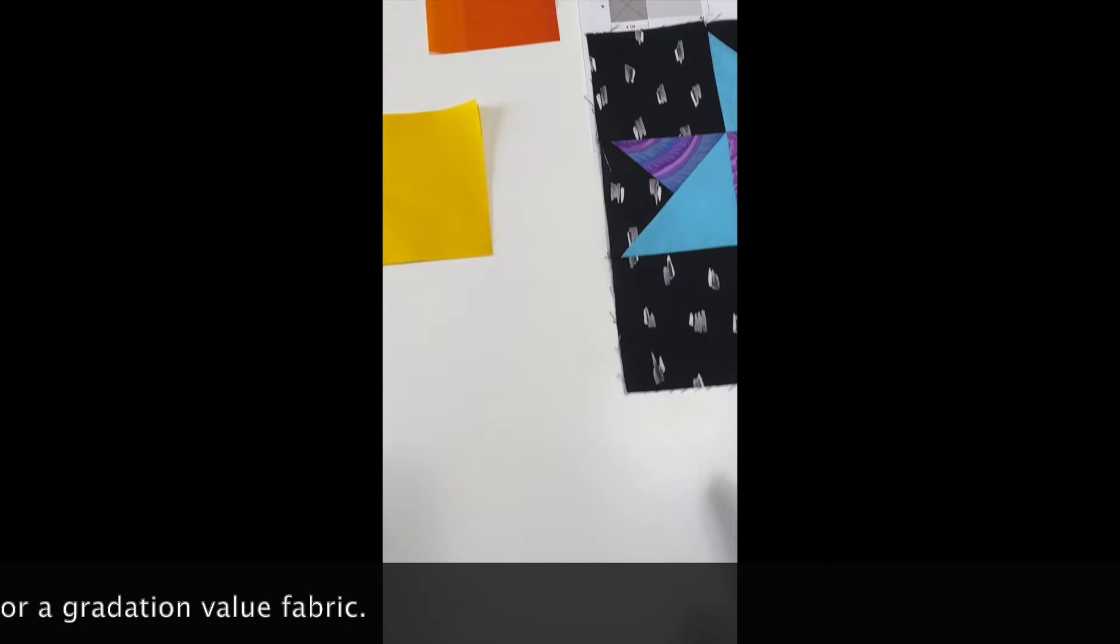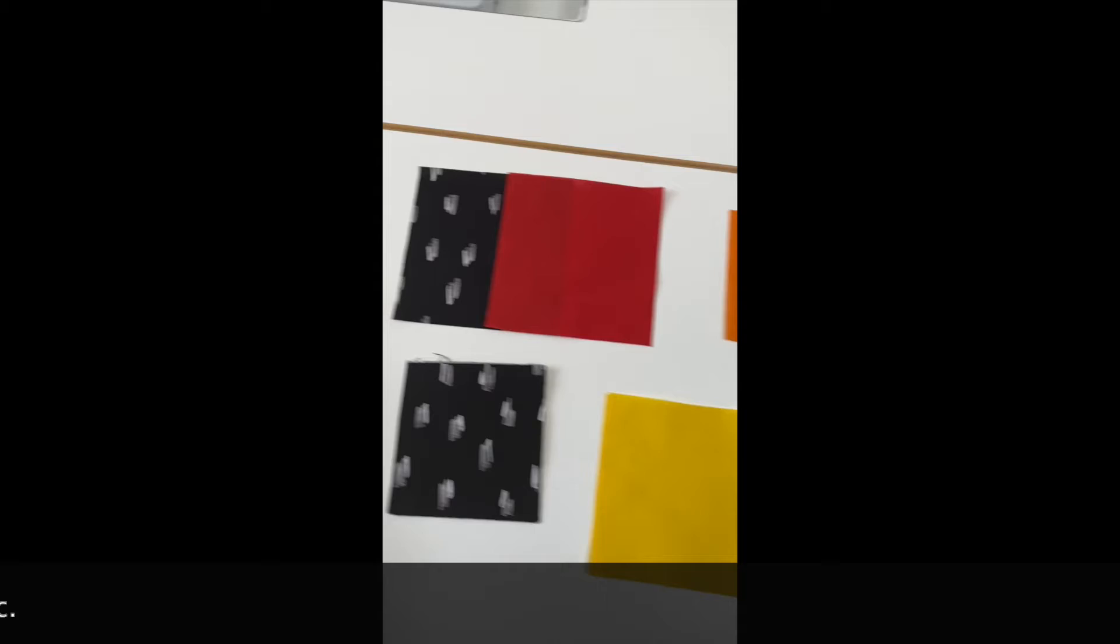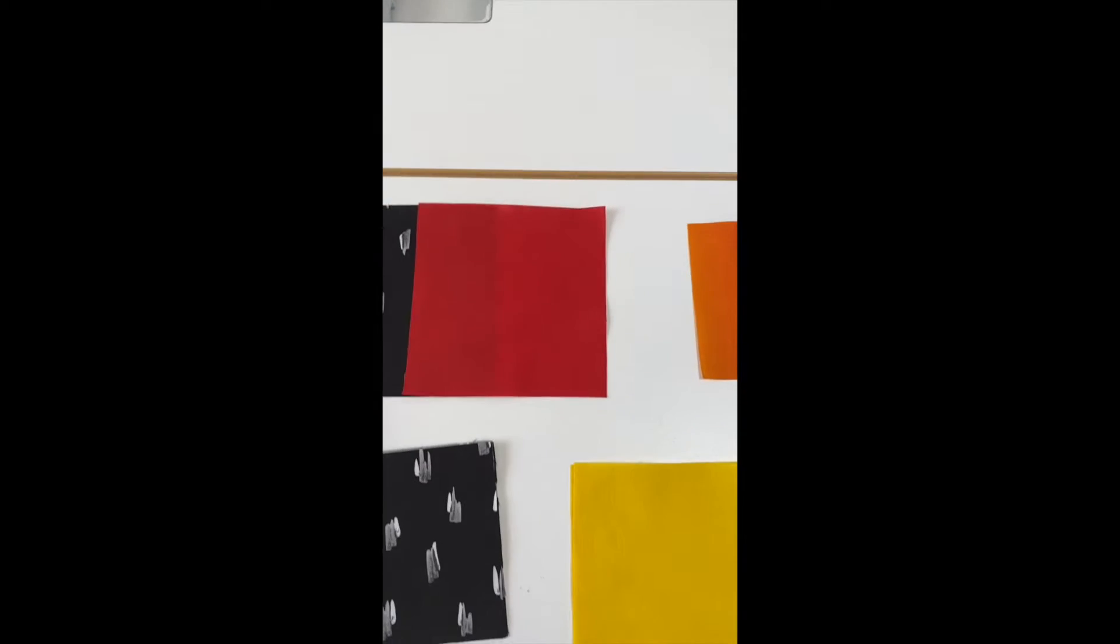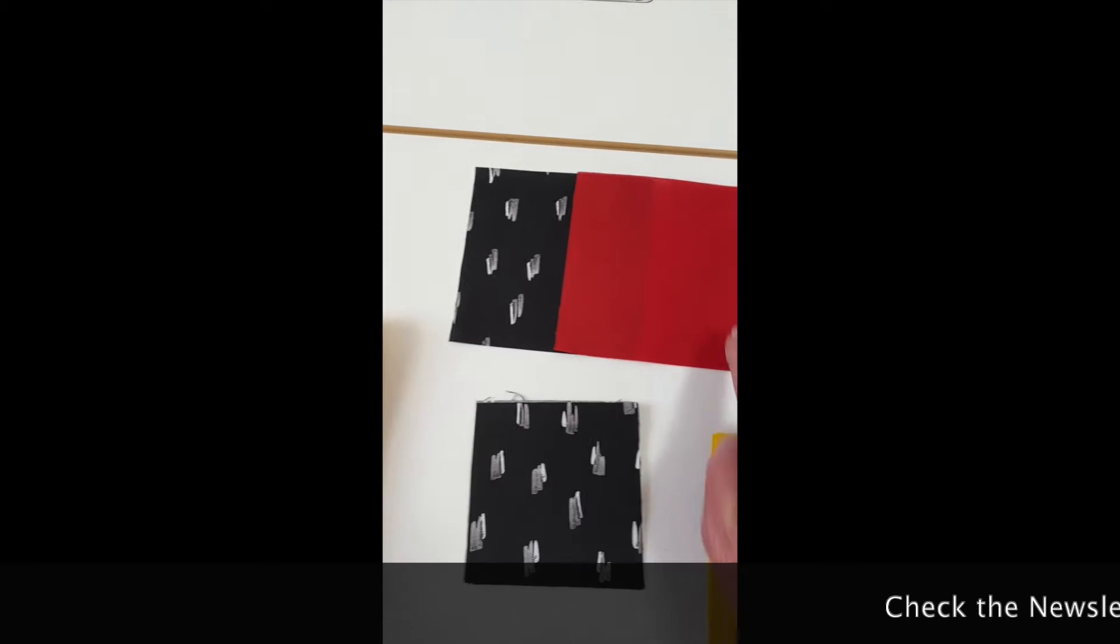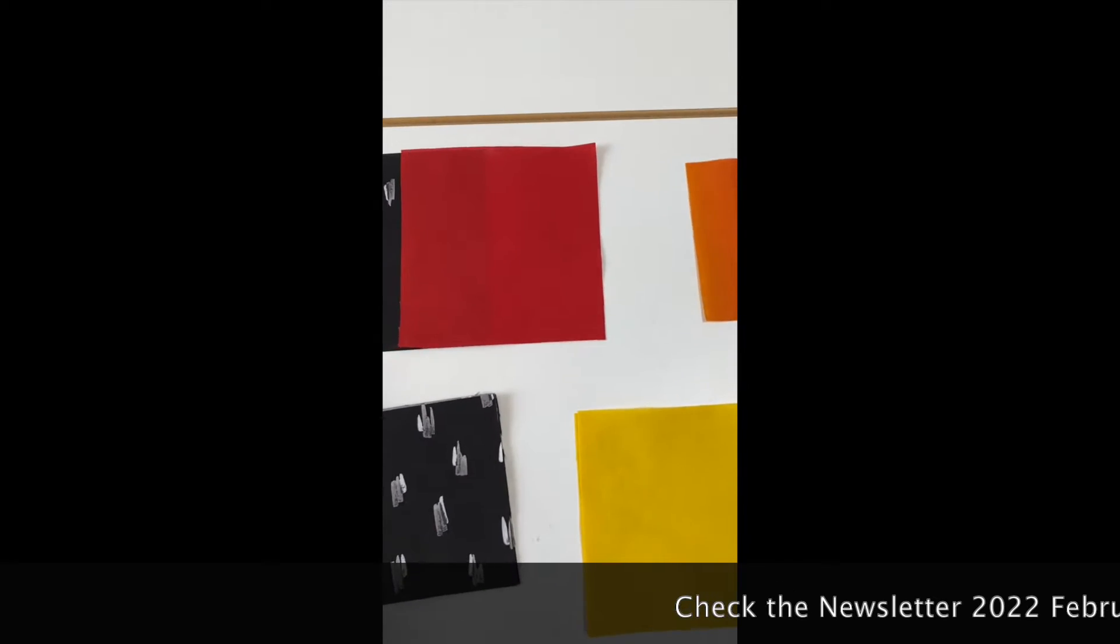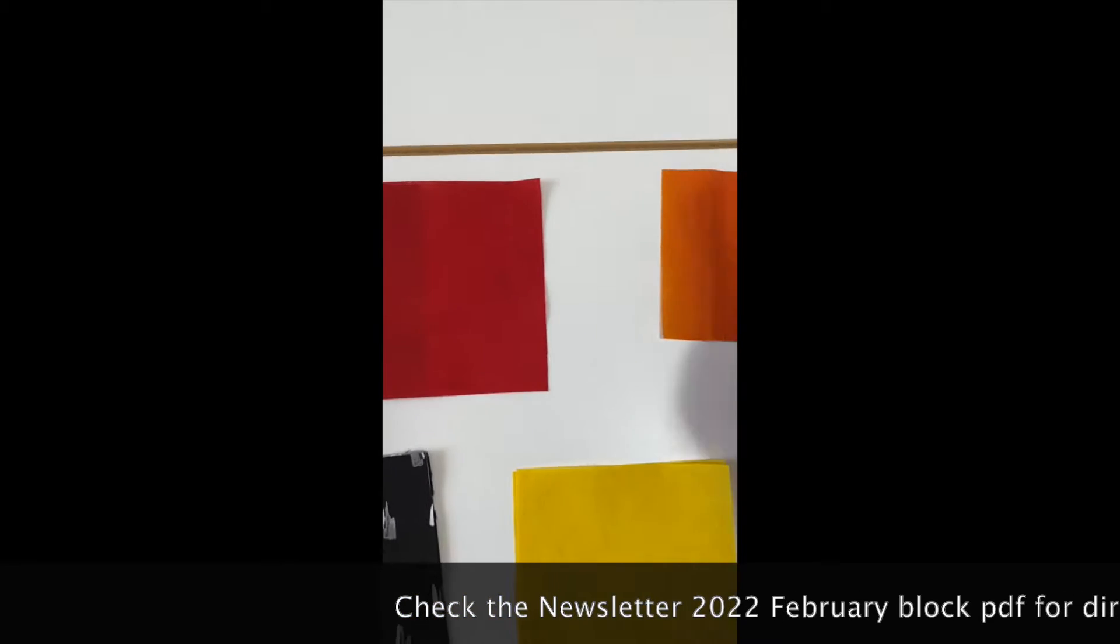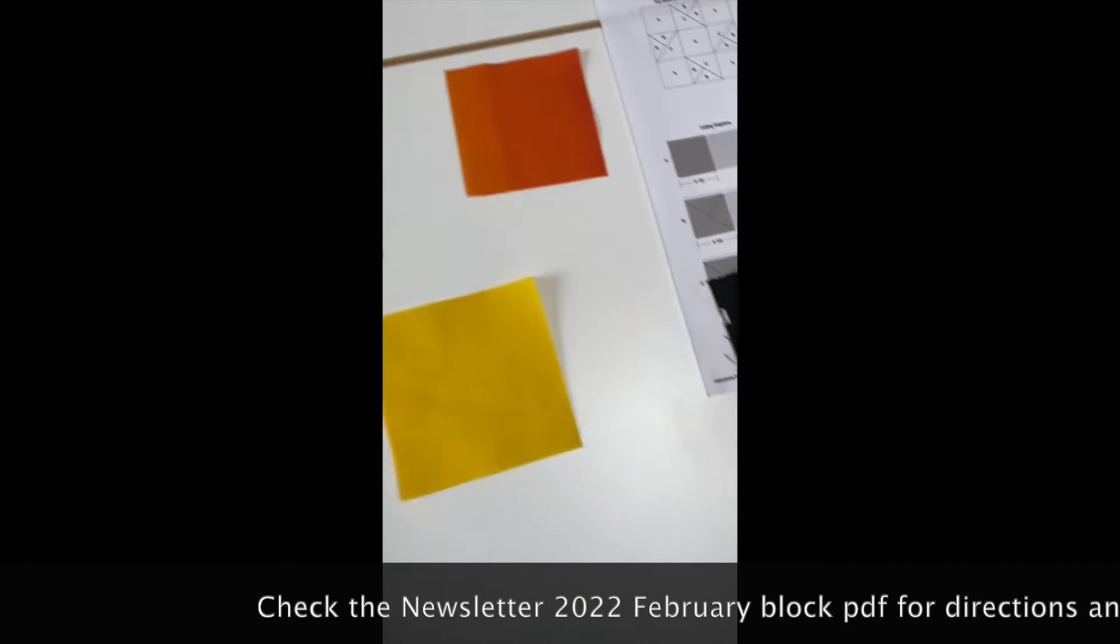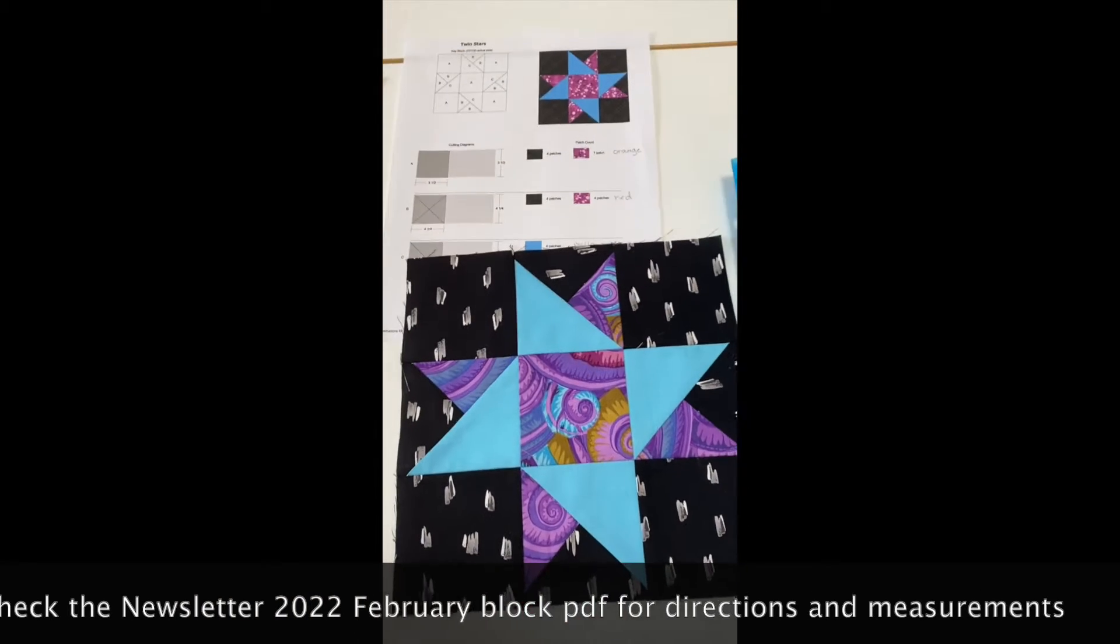So for my star this time, I'm going to need to cut two squares that are four and a quarter. This will be for the star points. This square will be in the center. I decided to use the orange in the center of the block because it will look like a combination of red and yellow.